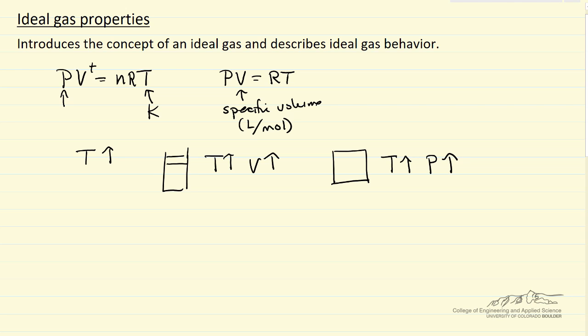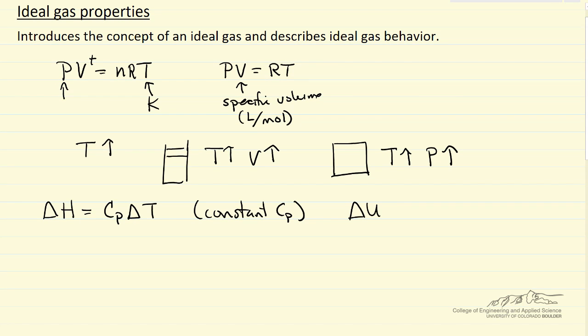Well one important property of an ideal gas is we can write a change in enthalpy in terms of heat capacity and the temperature change. So I'm writing this for constant values of heat capacity. We also have for internal energy, this is called the constant pressure heat capacity, and this is called the constant volume heat capacity, but these equations are good for ideal gases at all times.